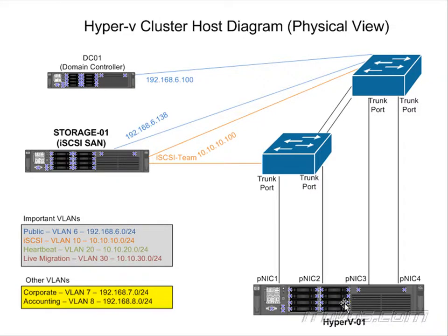Here's one of our hosts, Hyper-V01. It's going to have four physical NICs. There are a number of different types of configurations, and it kind of depends on how much bandwidth you need, how many virtual machines you're going to have, and how much those virtual machines communicate outside of the host. These NICs could be 10-gig NICs or gigabit NICs — that all depends on the resources you have available and how much bandwidth you need. If we have 10-gig NICs, a lot of times we'll just need two physical NICs.